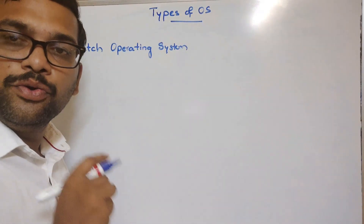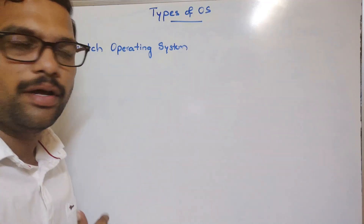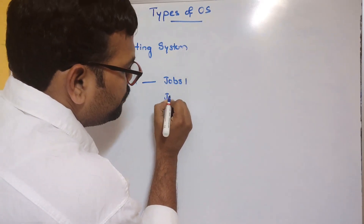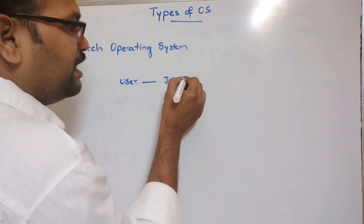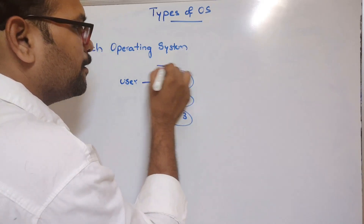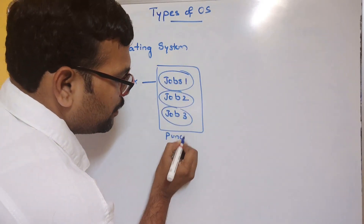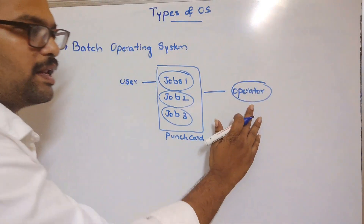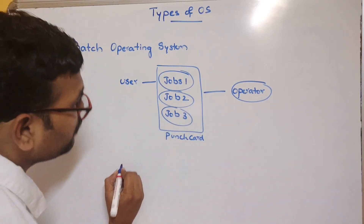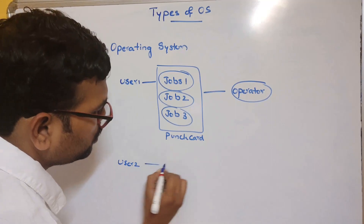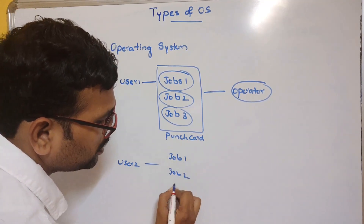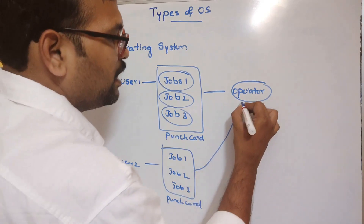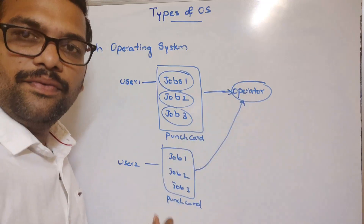In a batch operating system, the user will not be directly interacting with the computer. The user will give jobs — job one, job two, and job three — and these will be placed in a punch card. These punch cards will be given to the operator. The operator will collect these punch cards from different users, such as user one and user two.